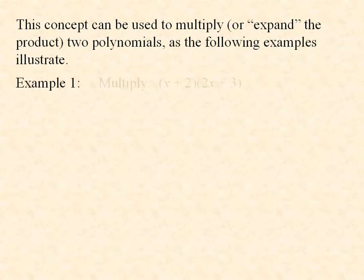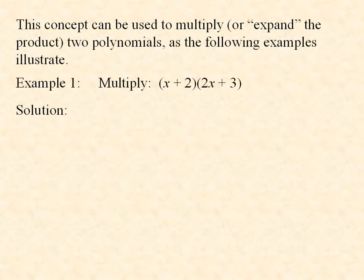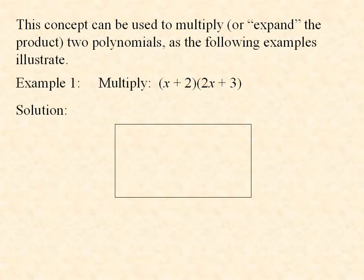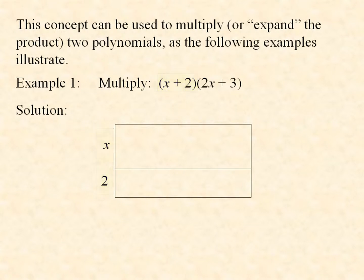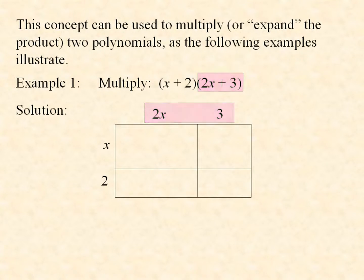Example 1: Multiply the quantity x plus 2 by the quantity 2x plus 3. We begin by thinking of this product as the width times the length of a large rectangle, so we draw a large rectangle. Then we split the width into two pieces, x and 2, and we split the length into two pieces, 2x and 3. This product, being the area of the entire rectangle, can now be thought of as the areas of the individual rectangles added up.